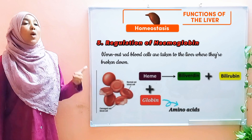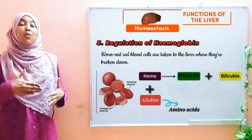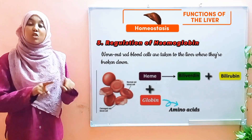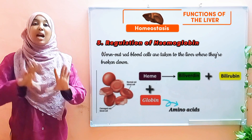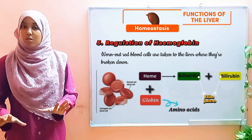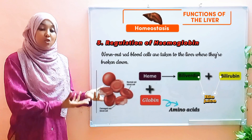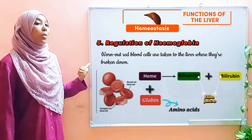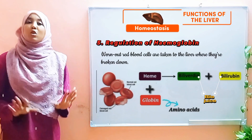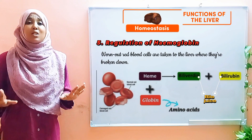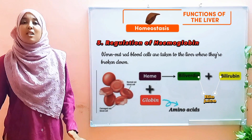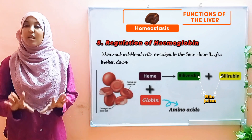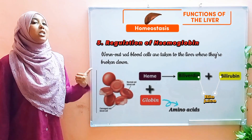In the case of heme, it is further broken down to form two components: biliverdin and bilirubin. These are then transported to the gallbladder where they are stored in bile juice. When digestion takes place, bile juice is released into the small intestine. Biliverdin and bilirubin are present within the bile juice and are used in the digestion of fats, until finally they are released in the feces. One fascinating fact is that the brown color of feces is actually a result of these two substances.